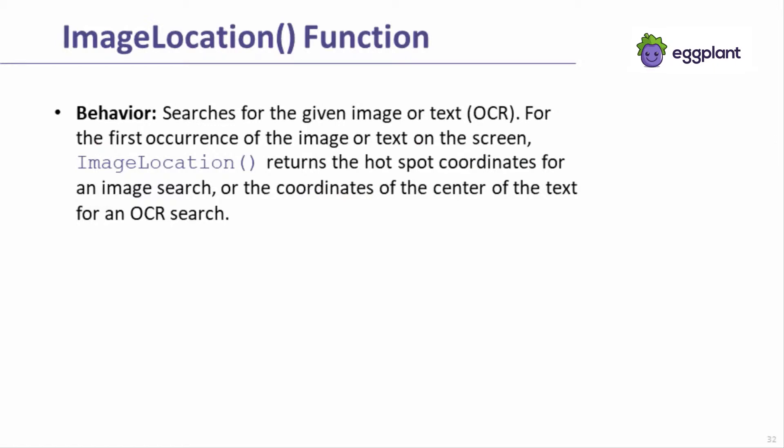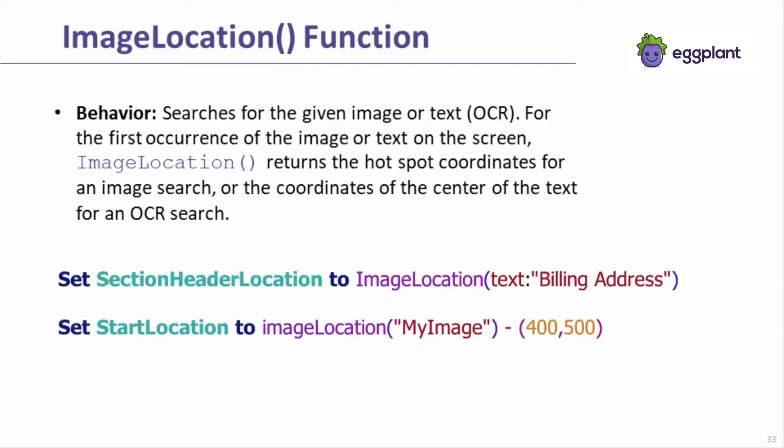This section of the video will cover a set of special functions that will become very useful when doing advanced scripting. The first function is called image location. Image location returns the coordinates of a hotspot of an image, or of the center of an OCR search, where they appear on the SUT. As in this first example, which performs an OCR search, the returned location can be stored into a variable. This second example shows how to perform coordinate math against the image location to create a location that is 400 pixels to the left and 500 pixels above the original image location.